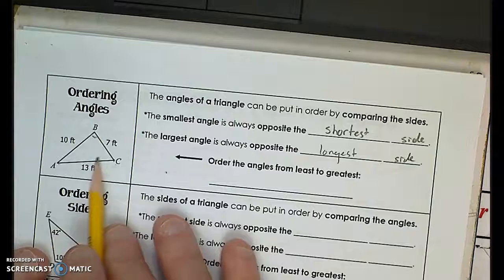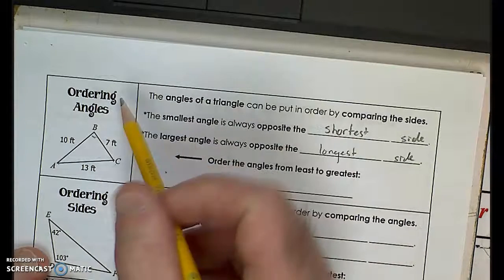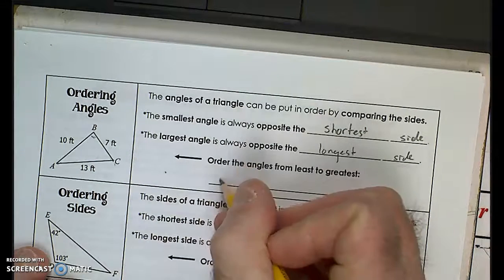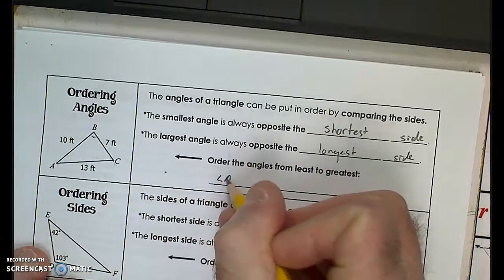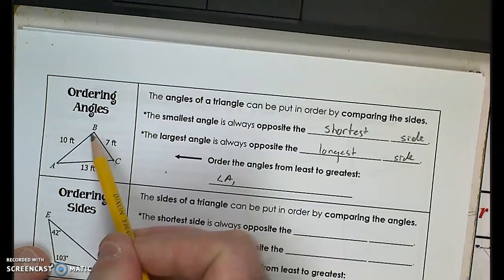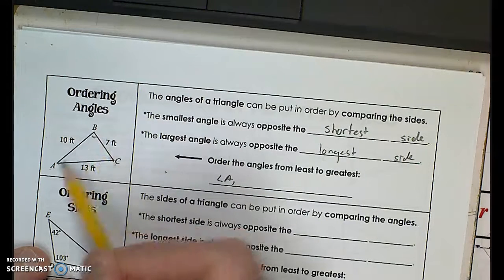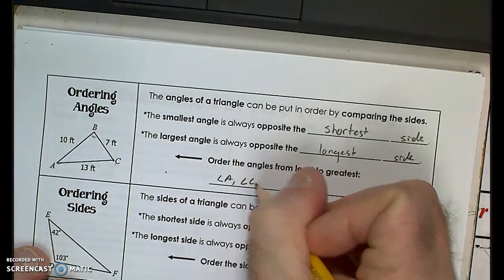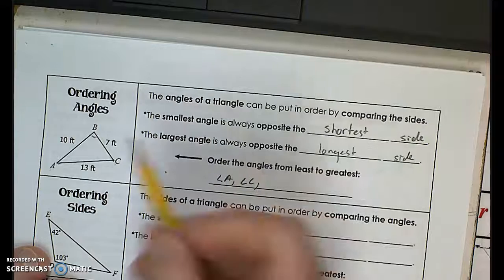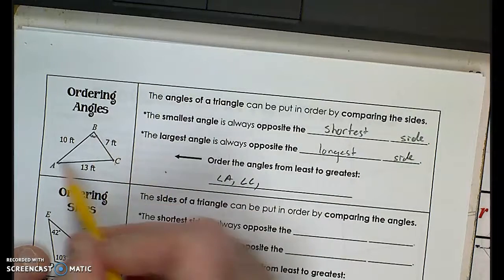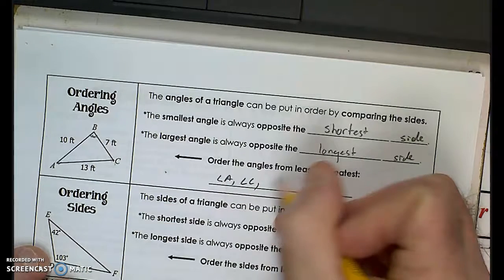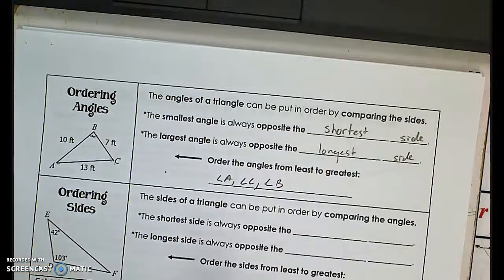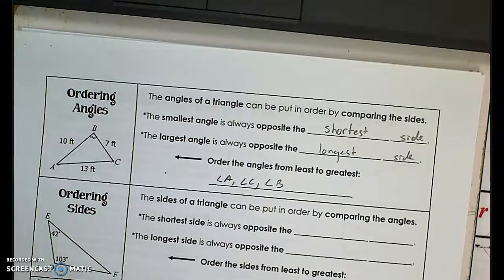If I were to order these over here, the shortest angle is going to be opposite the shortest side, so angle A is going to be the shortest. Then I have this side, which is opposite angle C, so angle C is going to be the next largest. The largest angle is angle B because it's opposite the longest side. That's ordered from least to greatest.